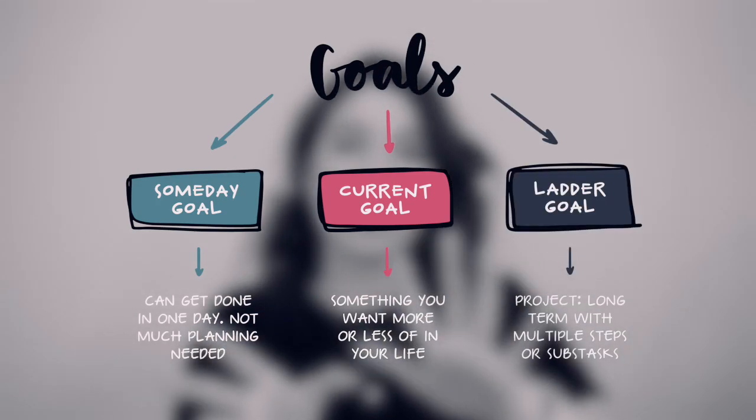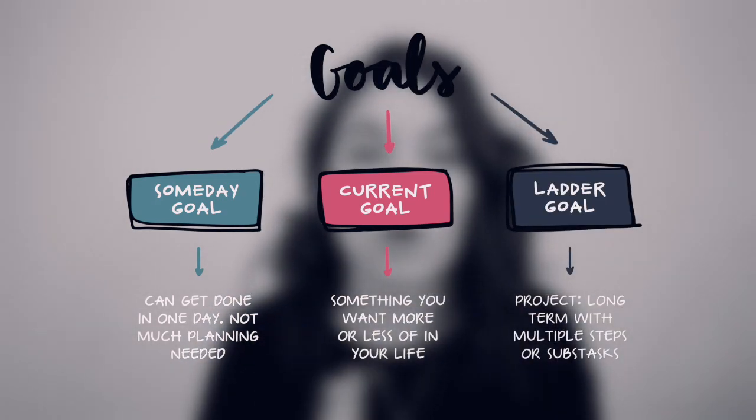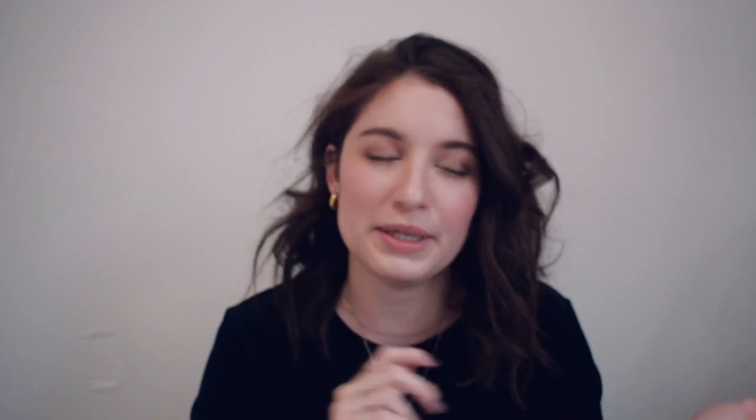For example: I'm the kind of person that exercises, I'm the kind of person that reads - things like read more, work out every day, drink more water. And finally, latter goals are more like projects. These are mid to long-term goals that usually have a bunch of steps that you have to achieve in order to achieve that bigger goal. They can usually be broken down and they feel more like projects than a short-term goal. Today, we're only going to focus on latter goals.